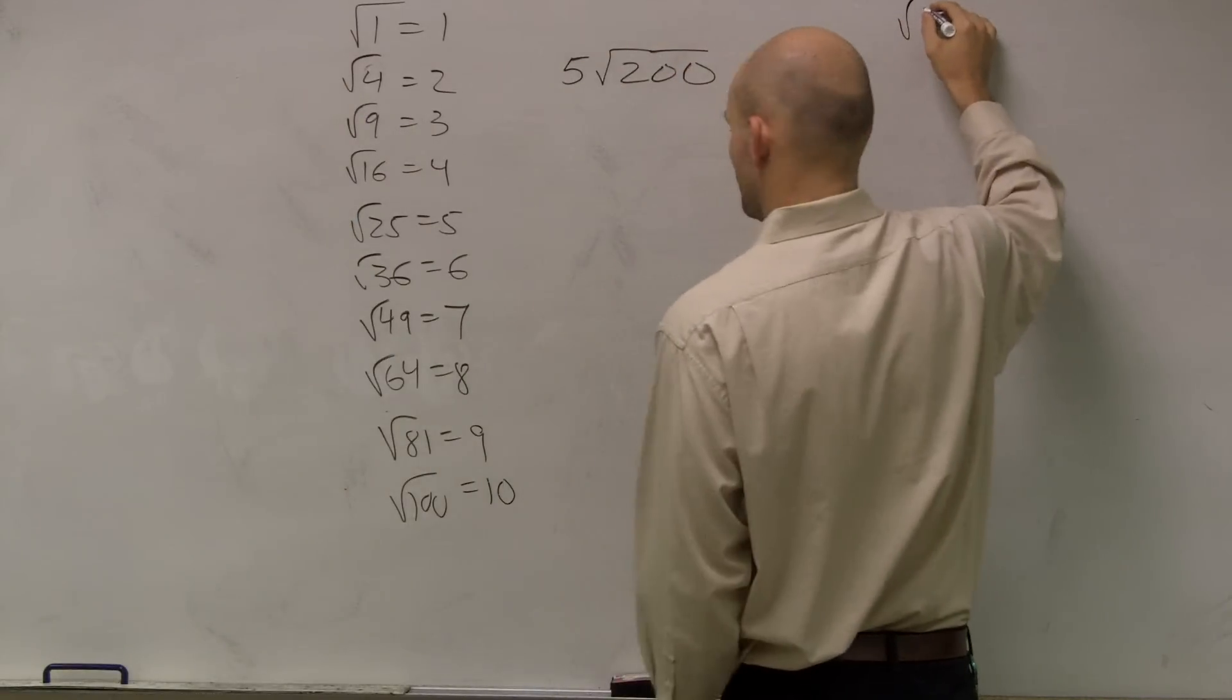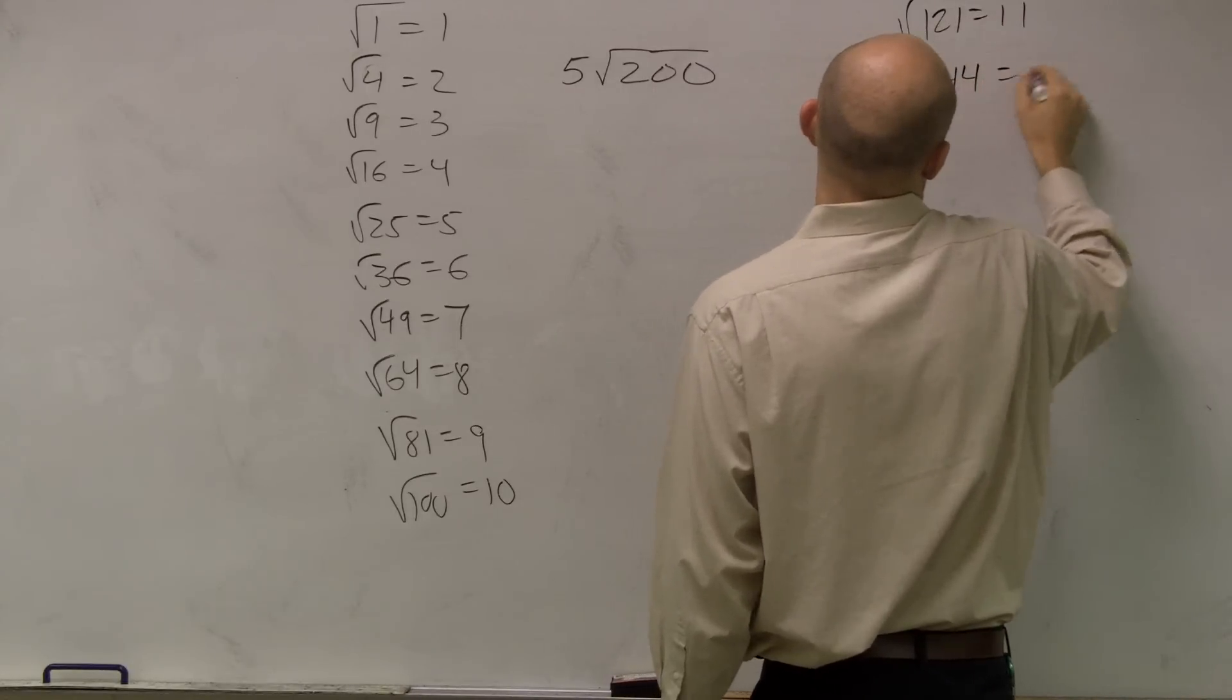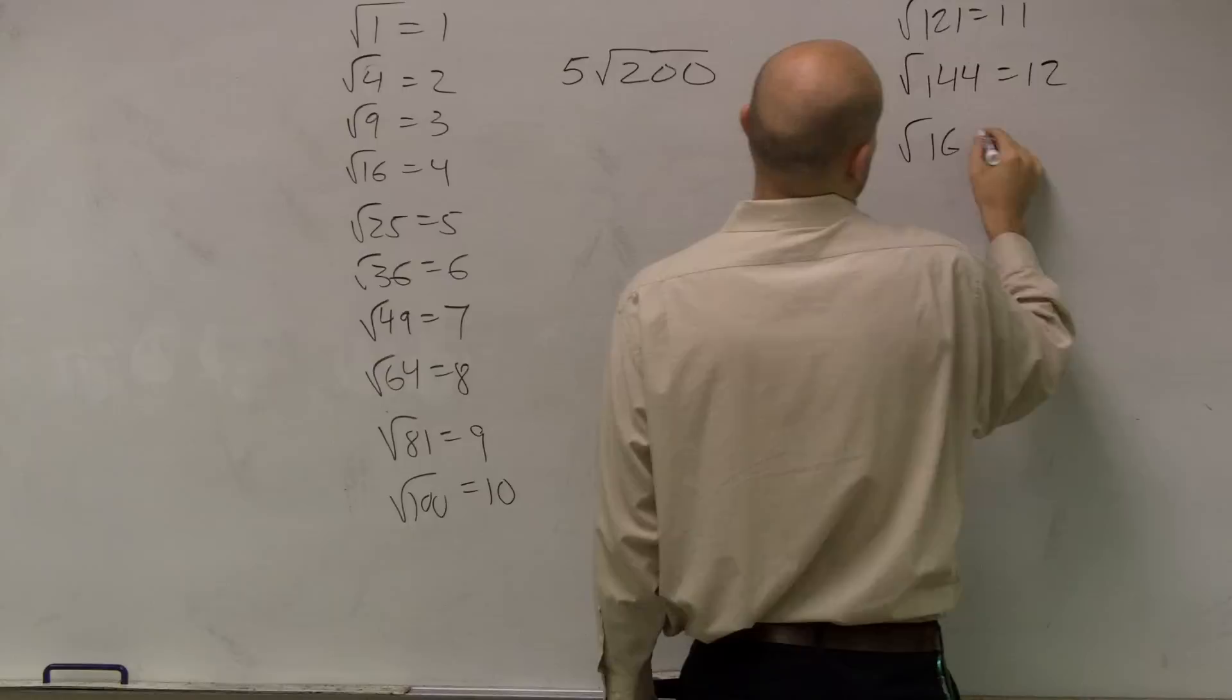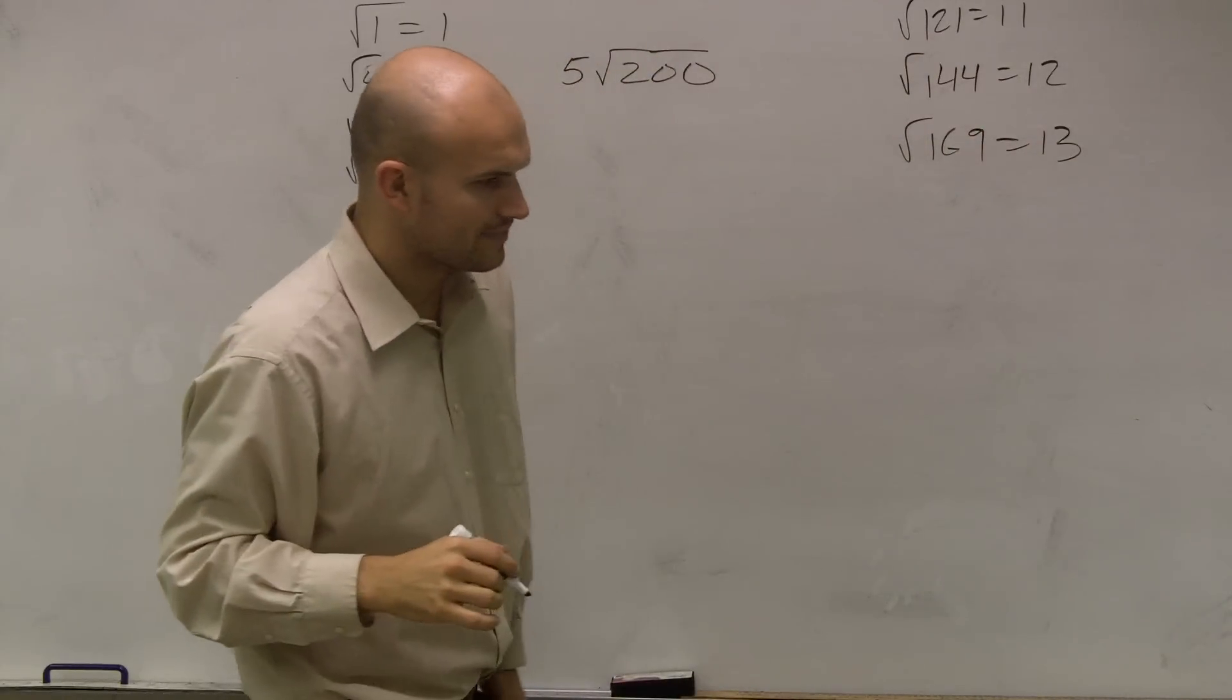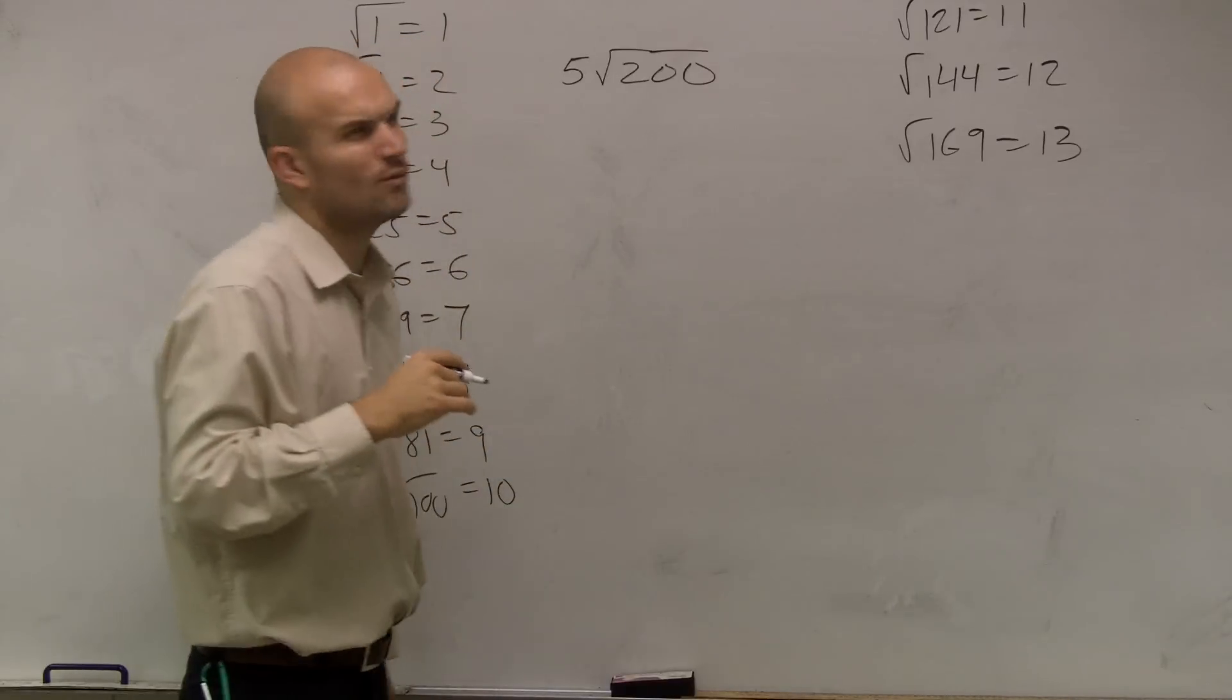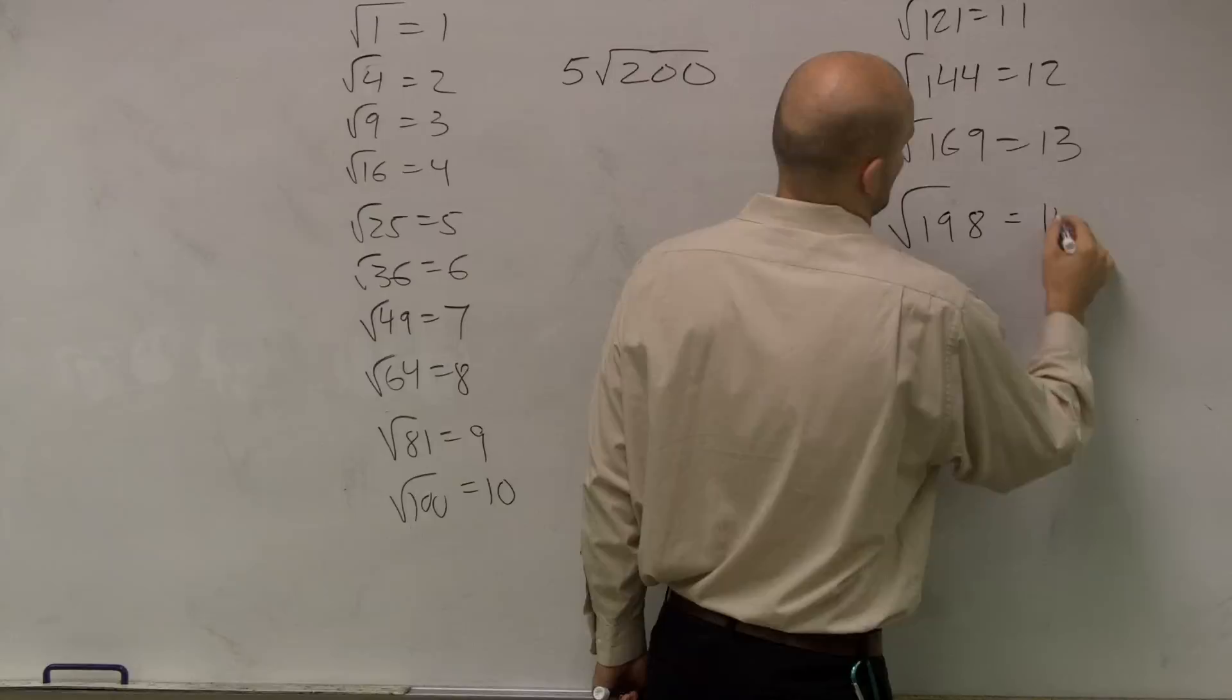The square root of 121 equals 11. The square root of 144 equals 12. The square root of 169 equals 13. And that's all I have remembered. 196 is 14. Square root of 196 equals 14.